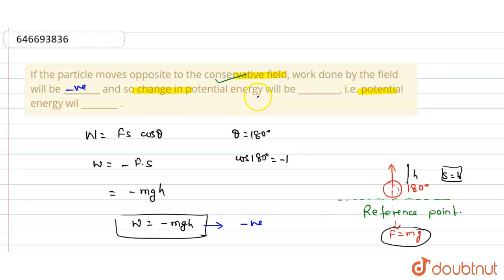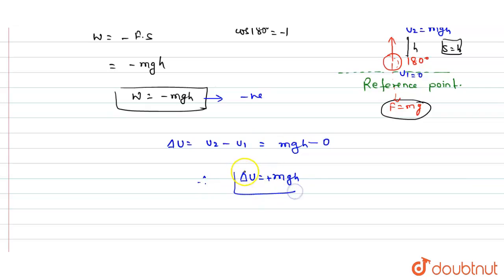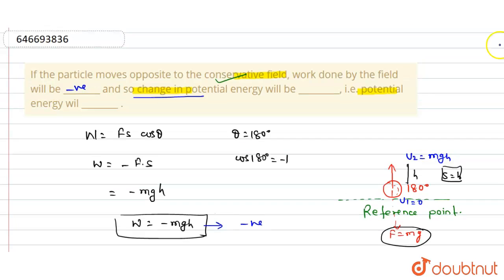Now, the change in potential energy: initially the potential energy U1 = 0, and at height H, potential energy U2 = MgH. Therefore the change in potential energy ΔU = U2 - U1 = MgH - 0 = MgH. The sign is positive, so the change in potential energy is positive.